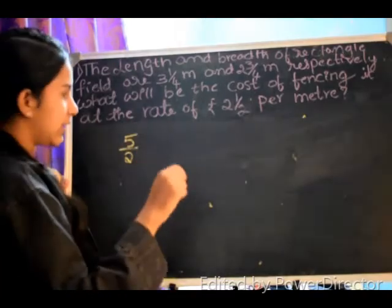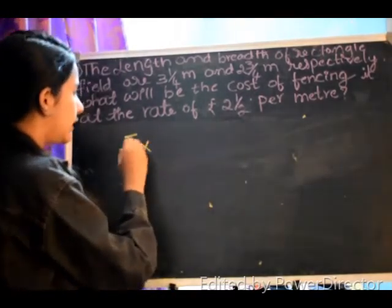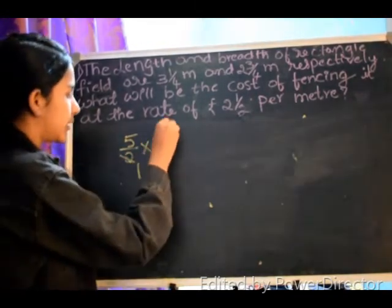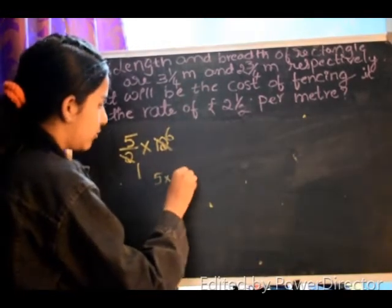Our total meters of fencing is 12 meters. So now 5 by 2 into 12. Simplifying: 2 cancels, 5 into 6 is equal to 30.